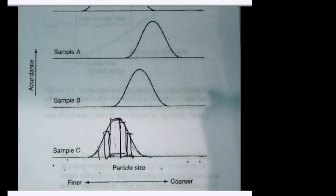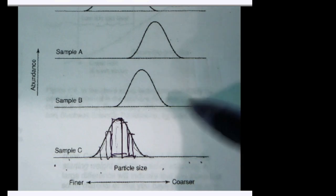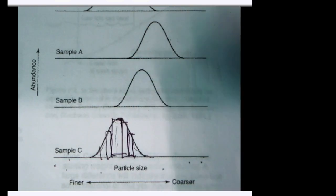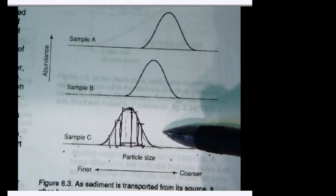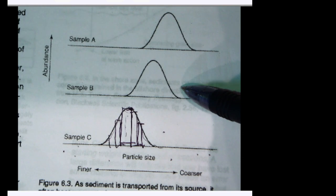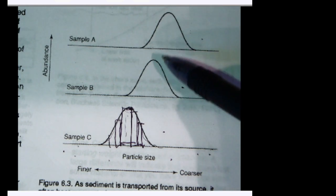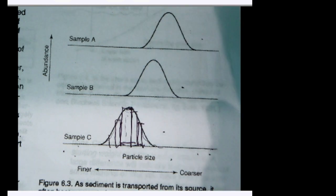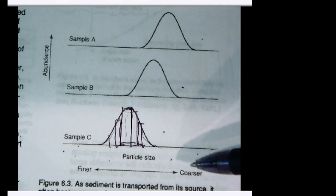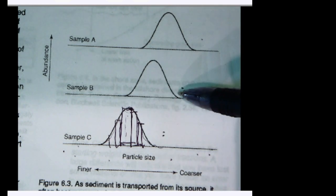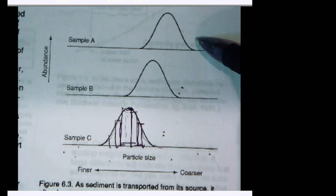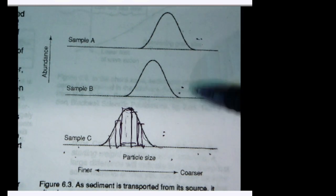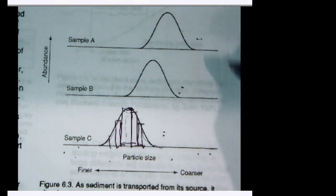Different sand samples can have very different distributions. One sample might correspond to a beach in Brooklyn, another from Long Island, another from New Jersey — they might all have different grain size distributions. This can also represent different zones along the same beach: the dry part, the area hit by waves, or the part that's always underwater. Going increasingly offshore, you might see different patterns.